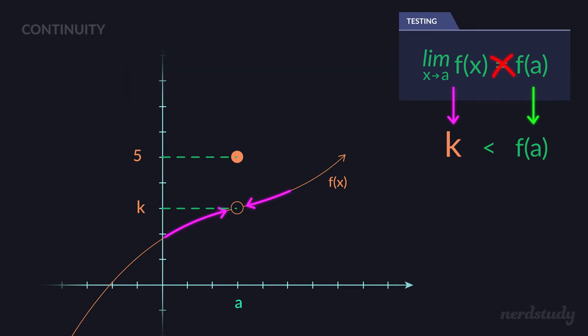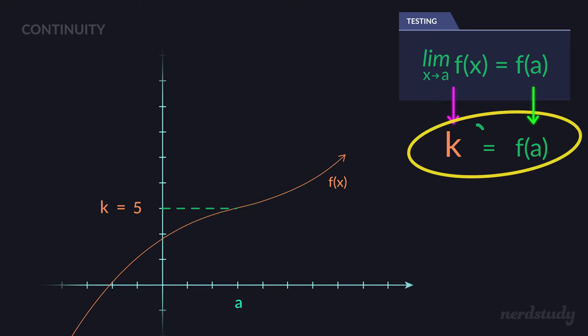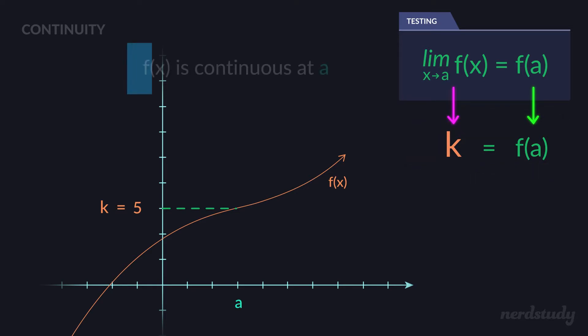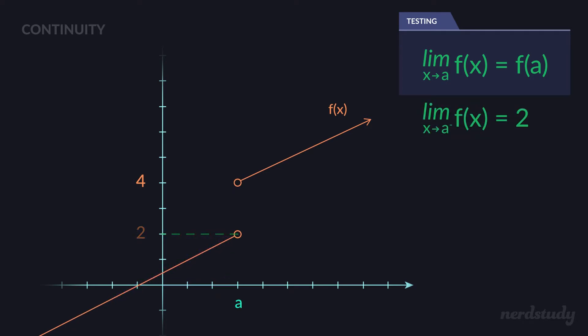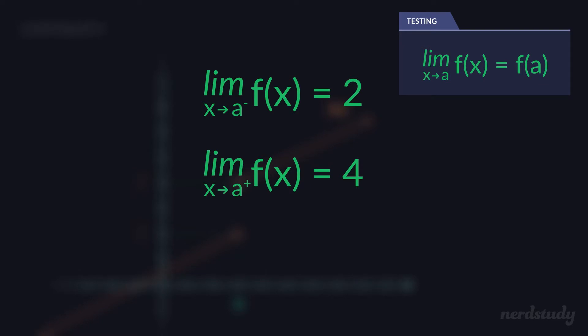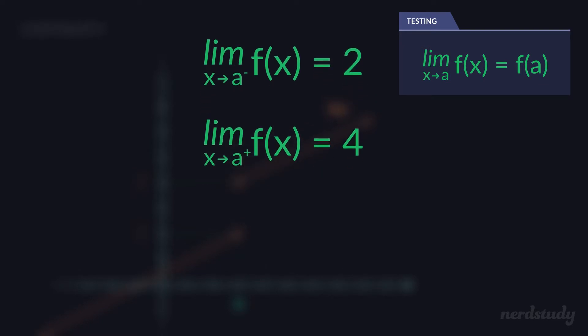Now, if that dot literally dropped into the hole, we would have a smooth line, and had that value been equal to the same k value that our limit was, then it would have been continuous at point a. We also need to be careful: when you have a graph like this one, you don't want to think that when a limit doesn't exist, it is in some way equal to an undefined value. For example, the limit as x approaches a from the left side equals two, and the limit as x approaches a from the right side equals four.